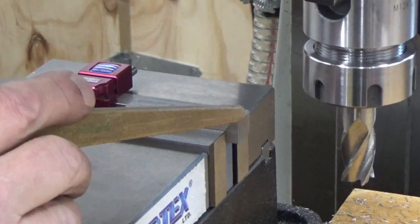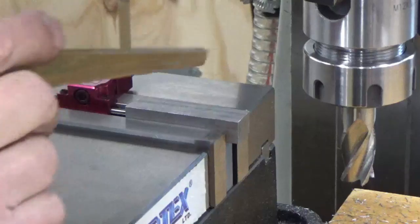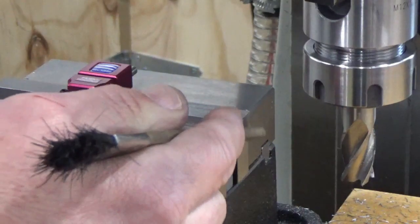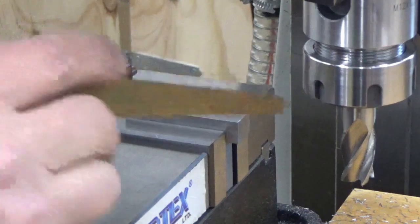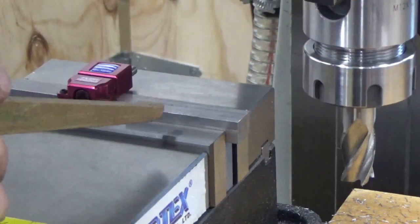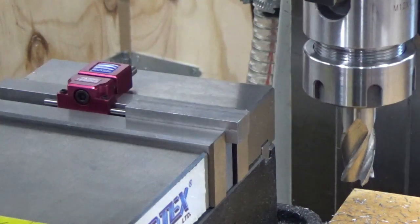So we're just doing the final length for the boring bar holders and we're just trimming off this end here. We've trimmed off this end, we've put a stop in, and we've set the mill up to the right position. Now we can just come in and get that done.